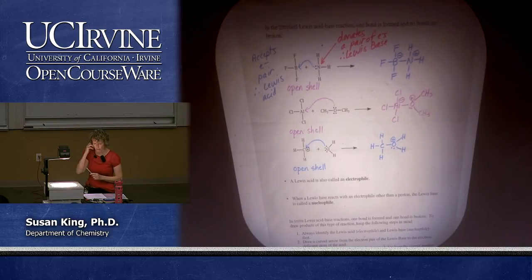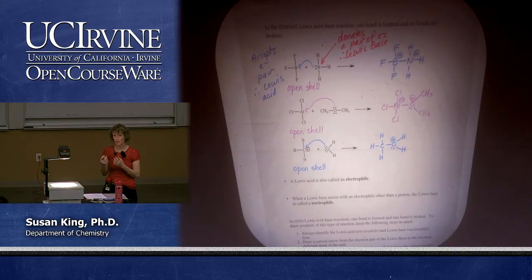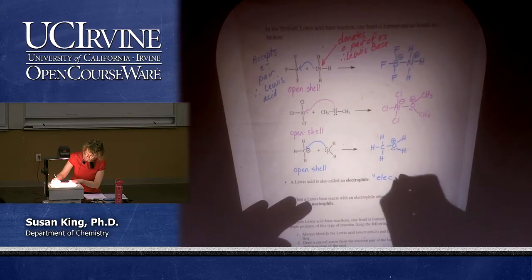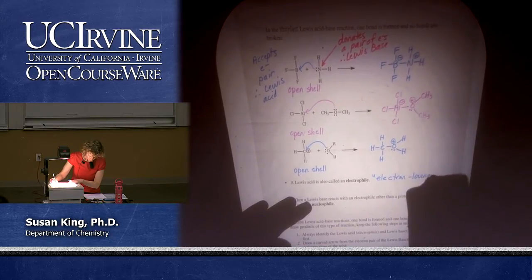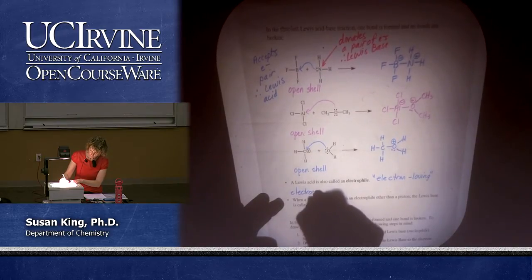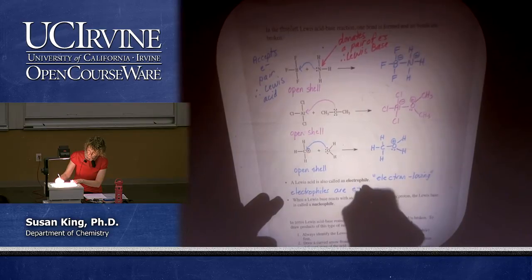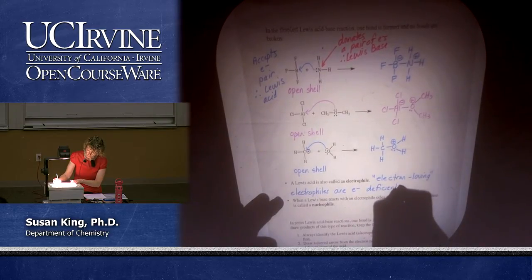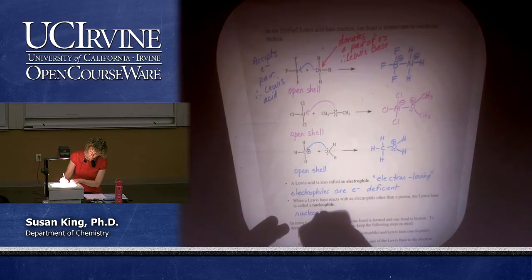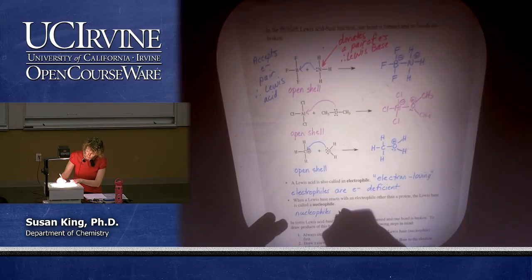A Lewis acid is also called an electrophile. Some textbooks don't use the term electrophile and nucleophile — they just use Lewis acid and Lewis base — but it's more common to use electrophile and nucleophile. A Lewis acid, or electrophile, means electron-loving — 'phile' for loving. Electrophiles are electron deficient. A Lewis base, when it reacts with an electrophile other than a proton, is called a nucleophile. Nucleophiles are electron rich.